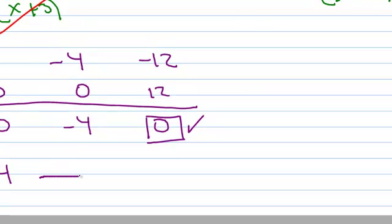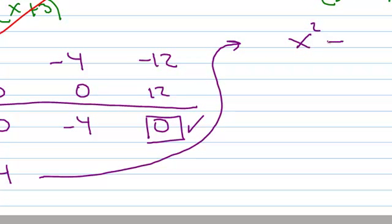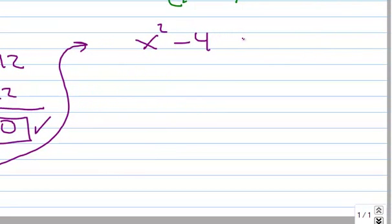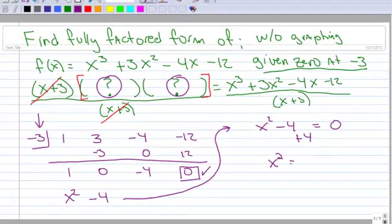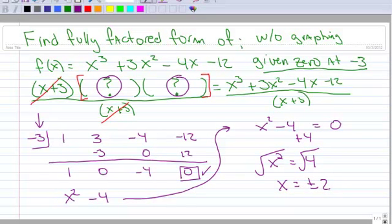So now what I do is I take this x squared minus 4 and I solve it. I'm going to solve for the other two x's, the other two zeros. And I'm going to do that by adding 4 to each side. And this looks like it's ready to be square rooted. And when I do that, I get x equals plus or minus 2.